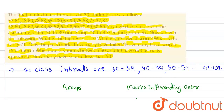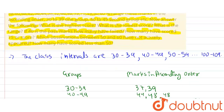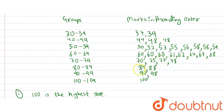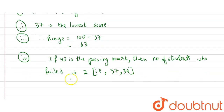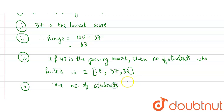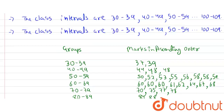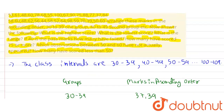The fifth question: how many have scored 75 or more? Counting from the table: 75, 77, 78, 84, 88, 90, 98, 100 — that's eight students. The number of students scoring 75 or more is 8.